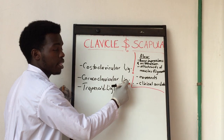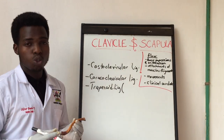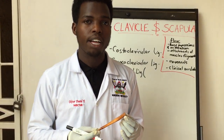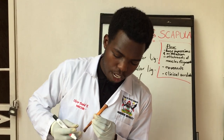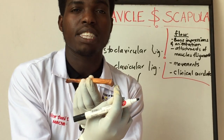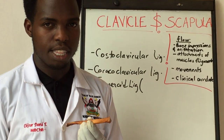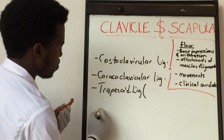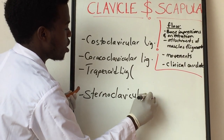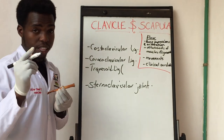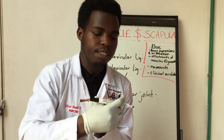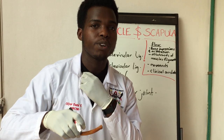Now let's look at the joints the clavicle forms with other structures. Medially, at the sternal end of the clavicle, on its inferior aspect there is a facet where it attaches with the manubrium of the sternum through a joint known as the sternoclavicular joint, which is synovial in nature. One thing to note is that not the entire medial aspect articulates — only the inferior surface — leaving the majority of the head palpable.